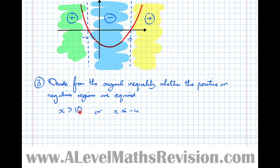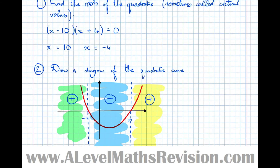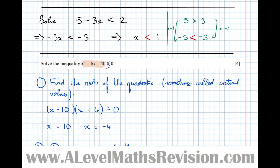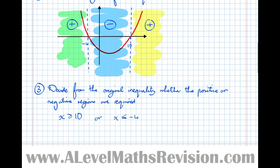The answer is in two parts because two strips were positive. If the question instead said less than or equal to zero, we'd want the negative strip — and there's only one, so we'd have a single inequality as our answer: minus 4 less than or equal to x less than or equal to 10. That's because there's one region to describe, written in the order the numbers appear on the number line, left to right.